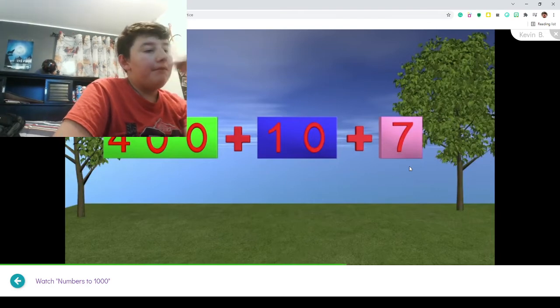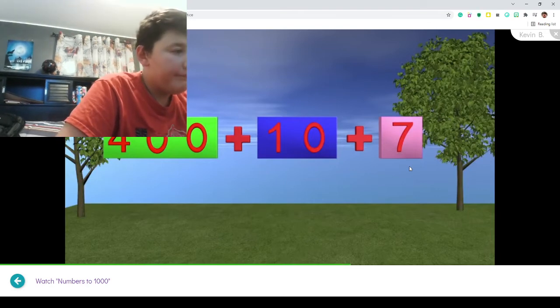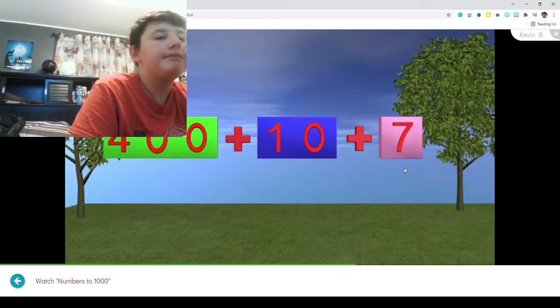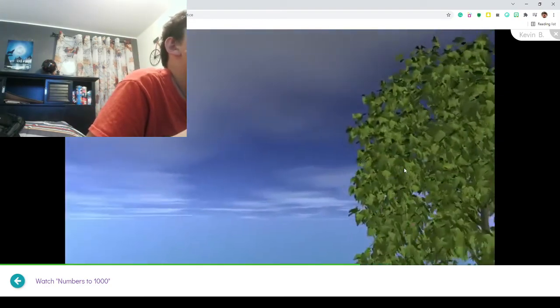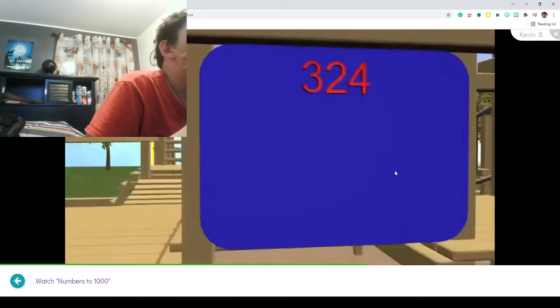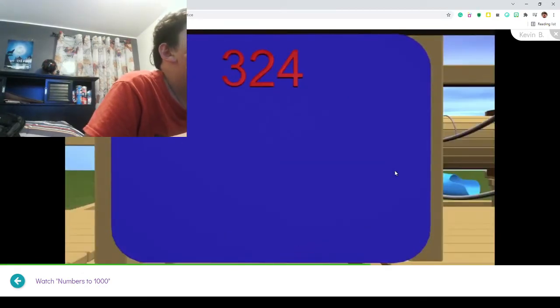Let's move to this board and look at another number. Let's see if you guys can help me figure out how to write the numbers in expanded form. Here we can see the number 324 in standard form. We need to write this number in expanded form. Let's start by looking at the 3.